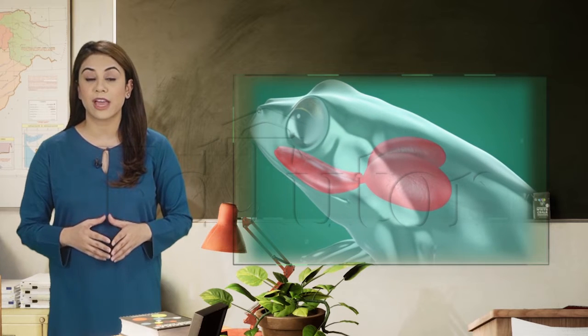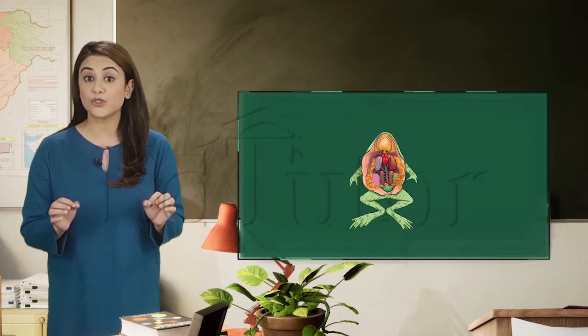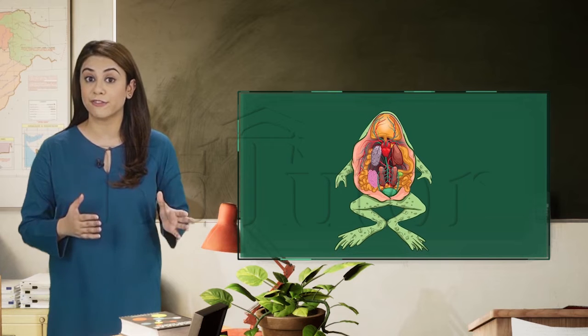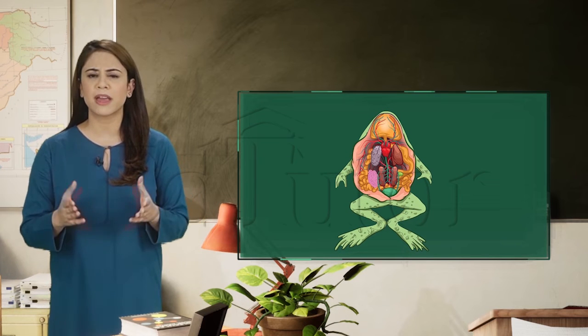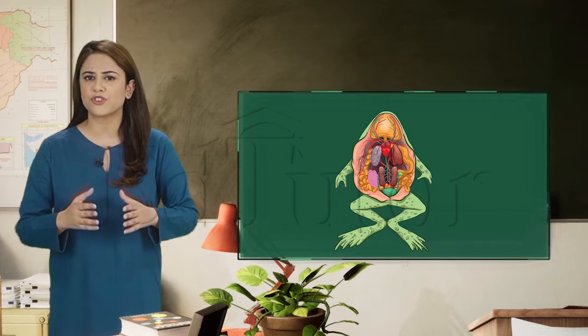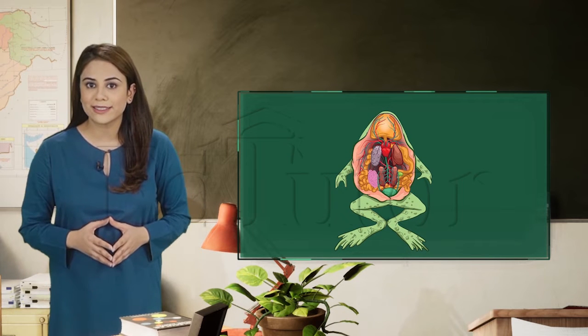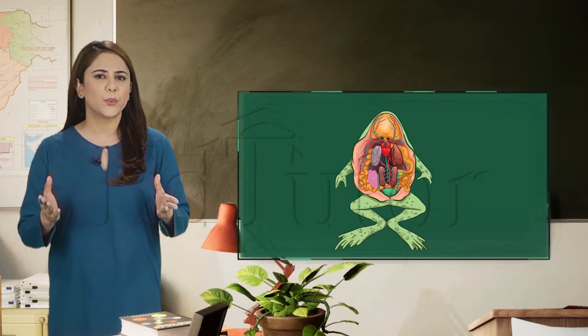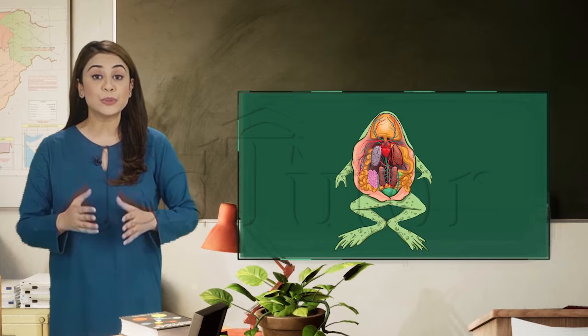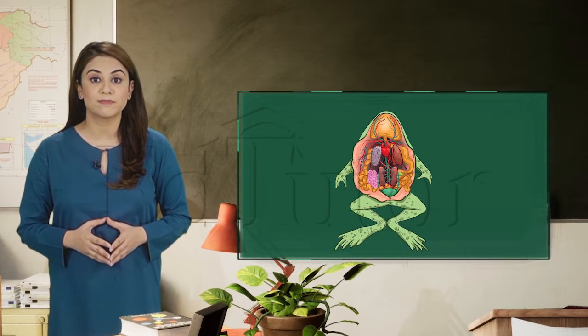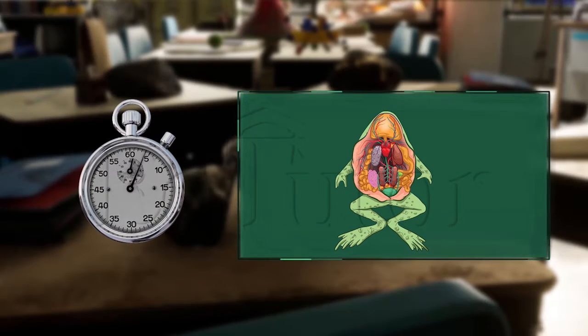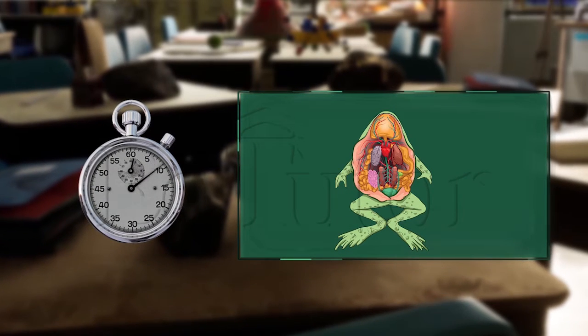Coming to the circulatory and respiratory systems and the chest cavity — can you tell which one is the left and right atrium and the ventricle of the heart? And where are the two lungs? I will give you 10 seconds to figure that out.